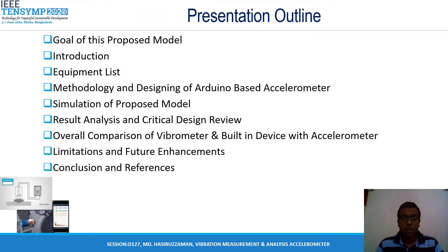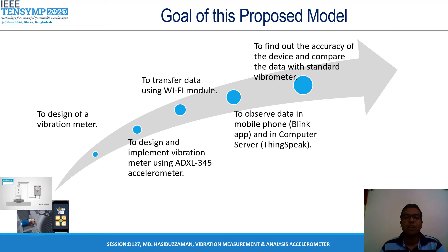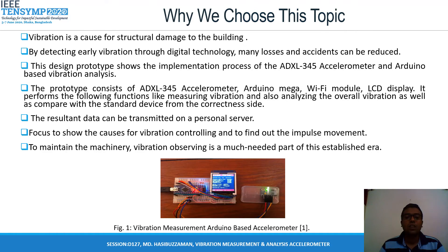Now a quick look at our presentation outline. First, let's talk about the goals of our proposed model. The main goals are: to design a vibration meter, to design and implement a vibration meter using the ADXL345 accelerometer, to transfer data using a Wi-Fi module, to observe data on a mobile phone and on a computer server, and to find the accuracy of the device and compare the data with a standard vibrometer.